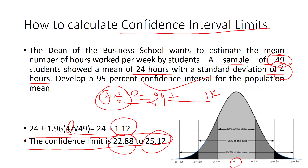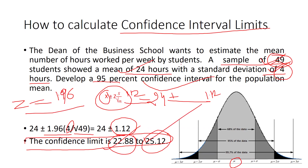To summarize: our sample was 49 students, the sample mean working hours was 24 hours, standard deviation was 4 hours, and at the 95 percent confidence interval level the z-table value is 1.96. Applying 4 divided by the square root of 49 gives us the confidence limits of 22.88 and 25.12.